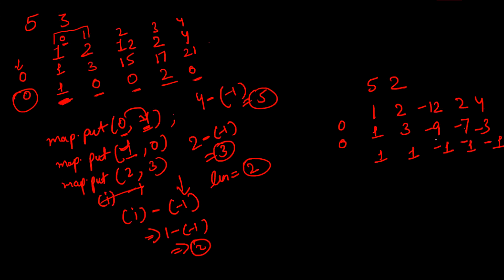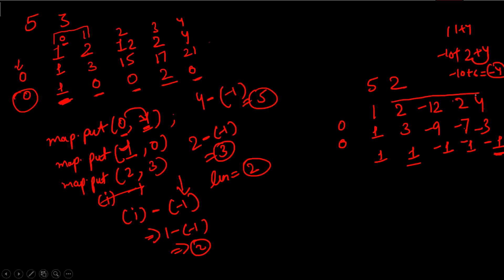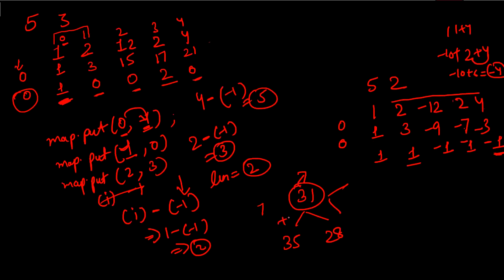The subarray [2, -12, 2, 4] sums to -4, which is divisible by 2. But the remainders at the boundaries are 1 and -1 — they don't match with the standard logic. To understand the fix: consider 31 divided by 7. The remainder can be expressed as +4 (to reach 35) or -3 (to reach 28). Notice -3 + 7 = 4, so both representations are equivalent.